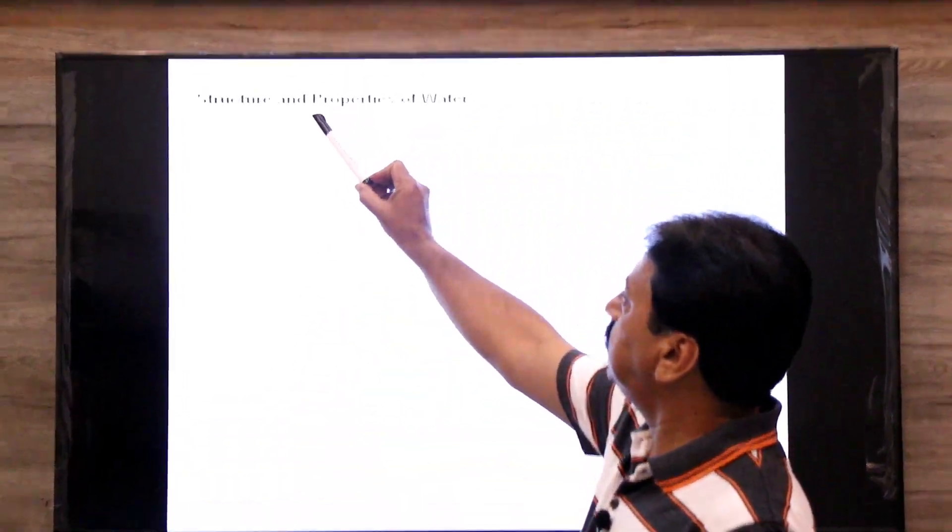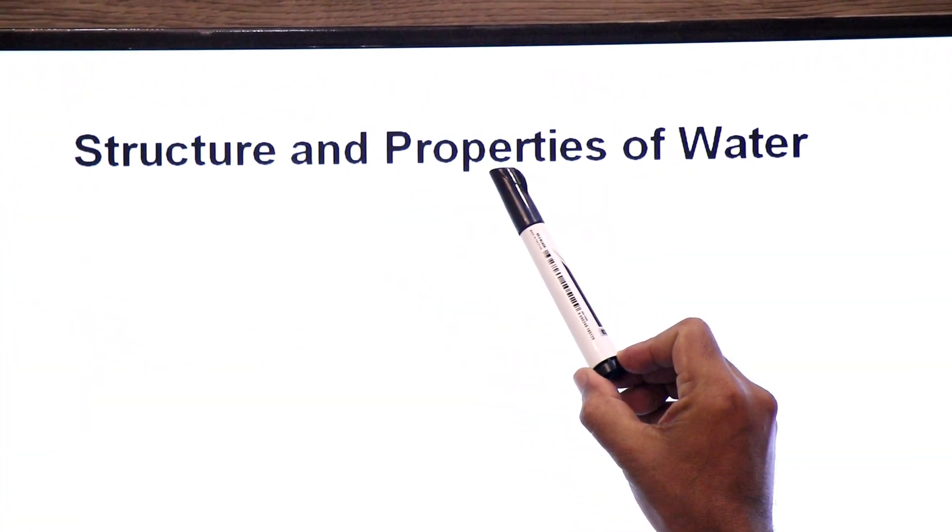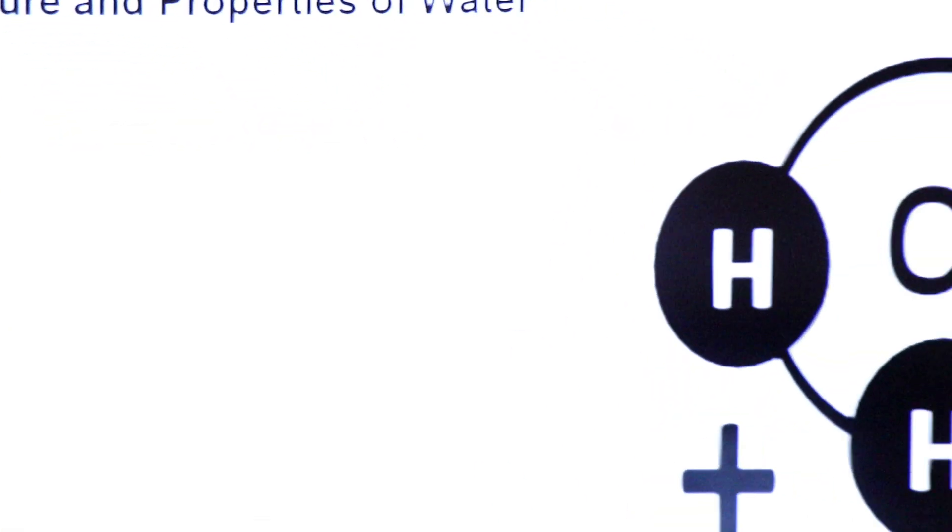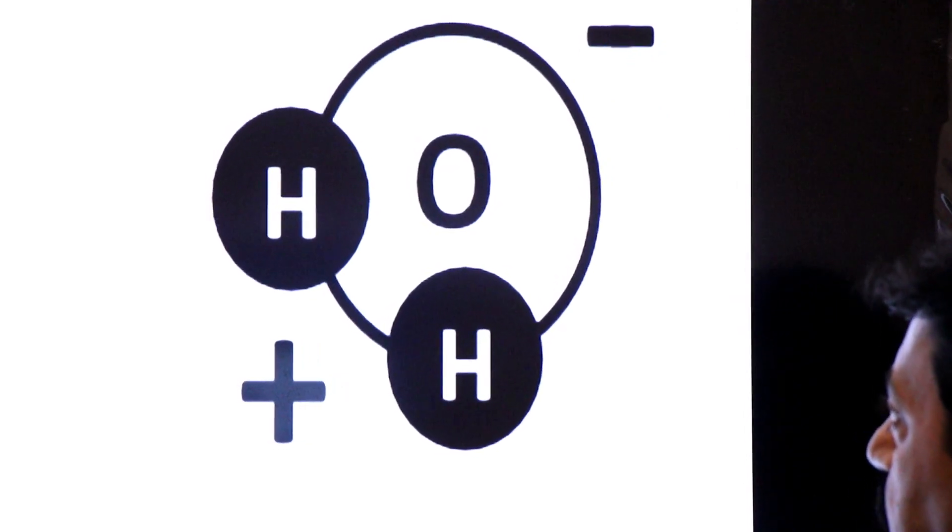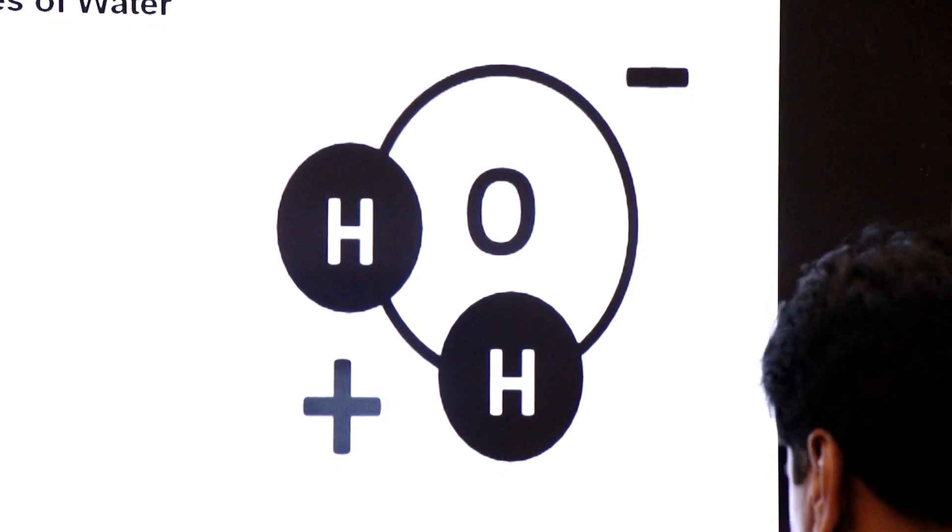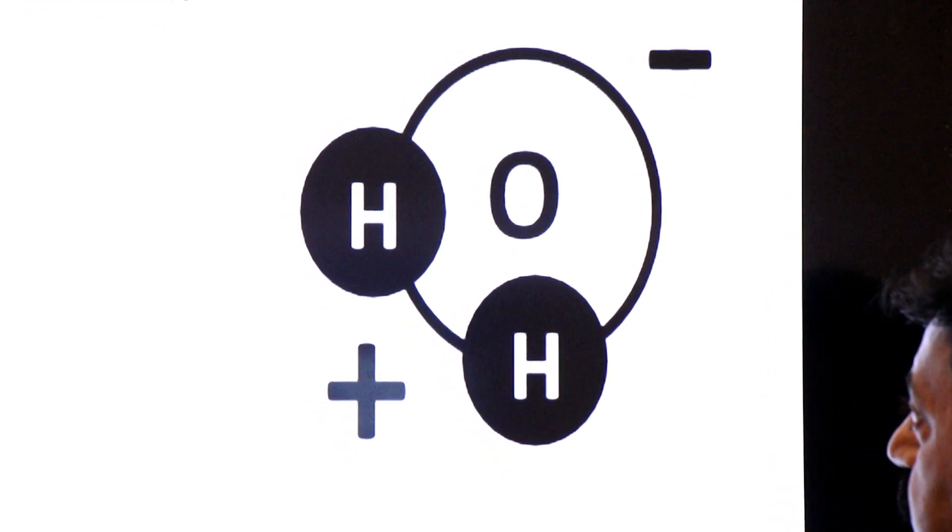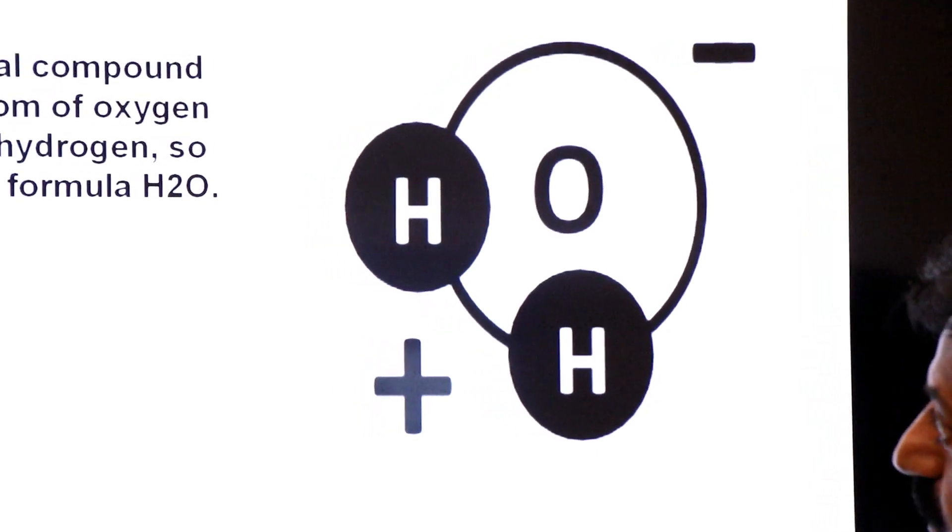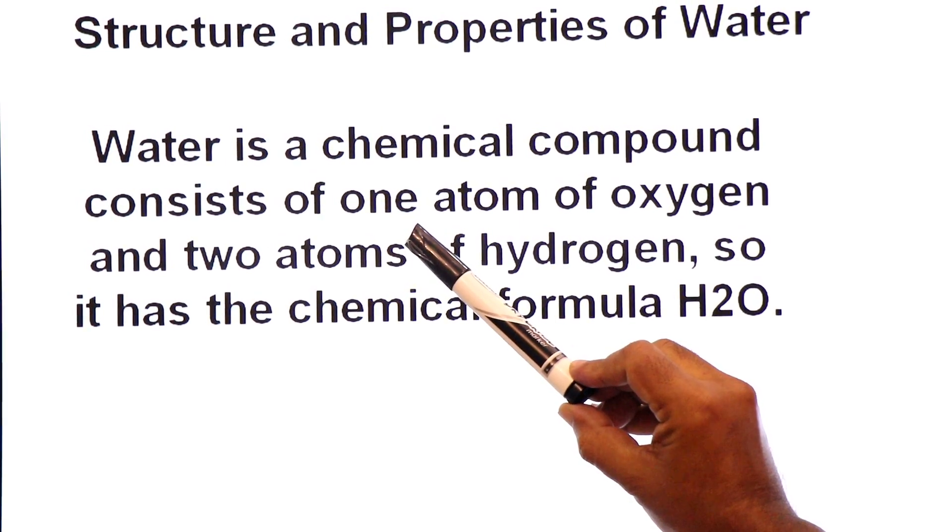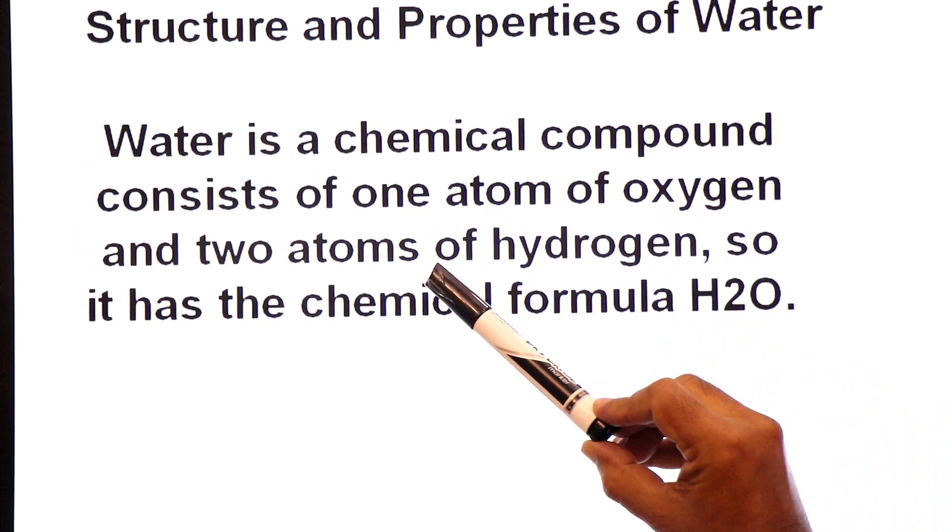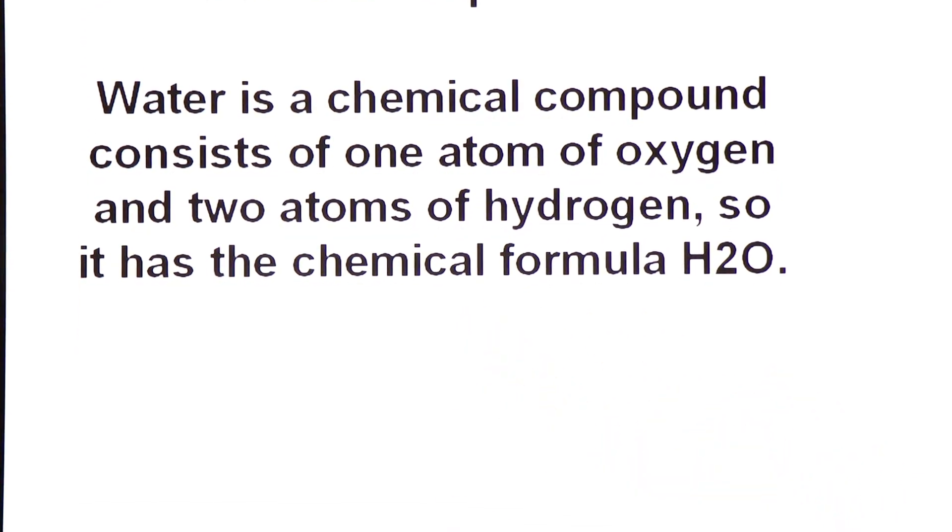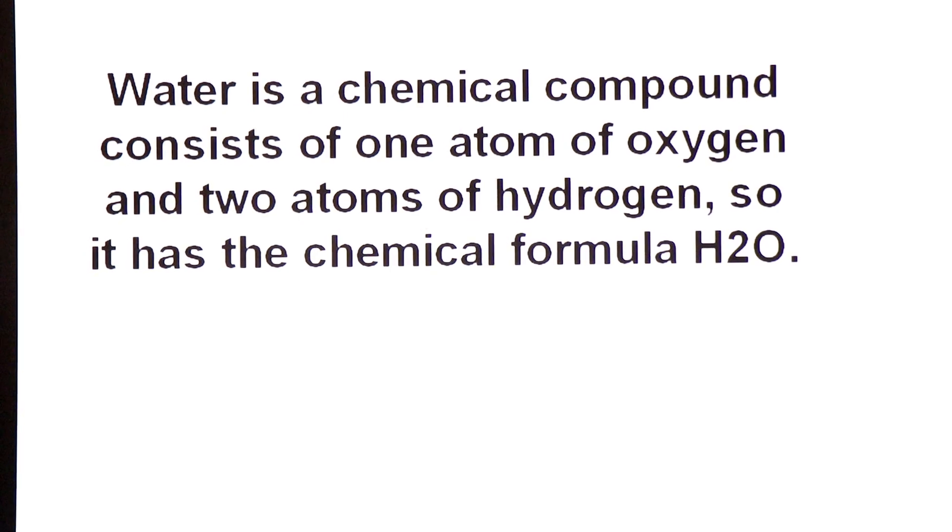Dear students, this is the structure of water in which one oxygen is covalently bonded with two hydrogen atoms. In this way, water is a chemical compound consisting of one atom of oxygen and two atoms of hydrogen, so it has chemical formula H2O.